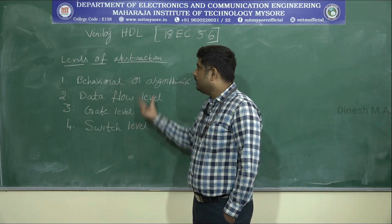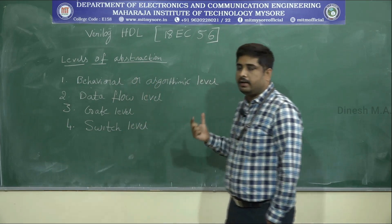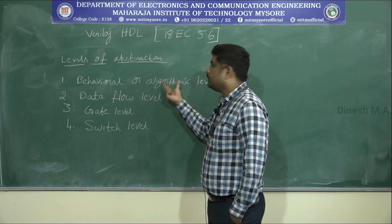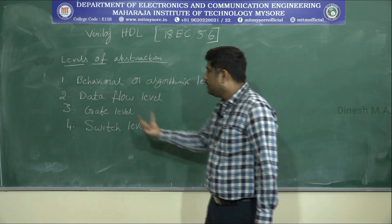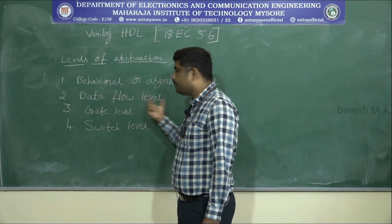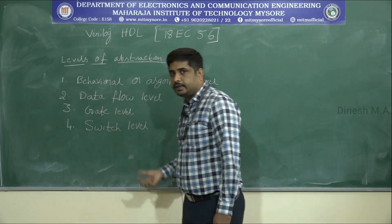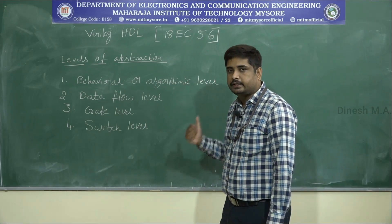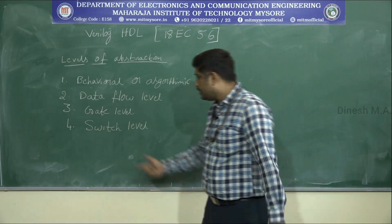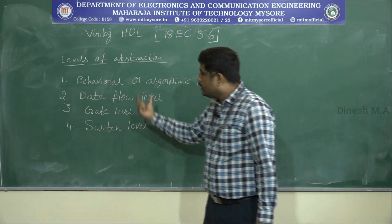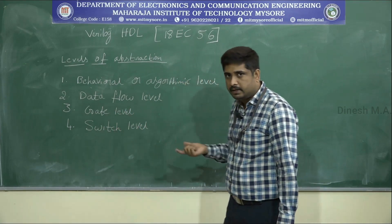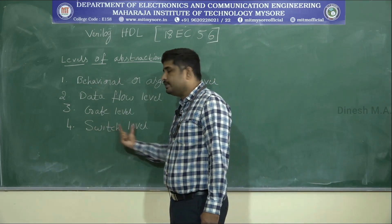These are all four descriptions. Behavioral description: the function depends on an algorithm, so it's called algorithmic. Data flow description: data flows from one register to another. Gate level description: we use different gates — basic gates, universal gates, or special gates — all interconnected. Switch level description is the lowest level, where we use different transistors such as PMOS and NMOS that act as switches.